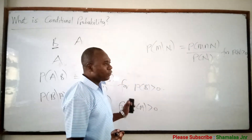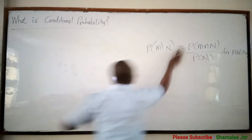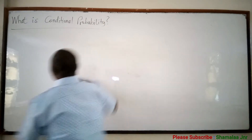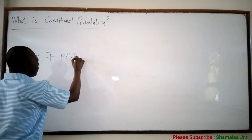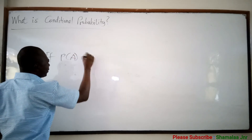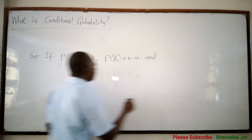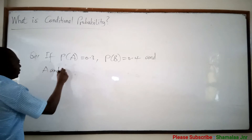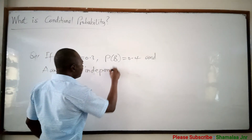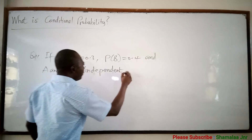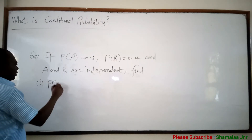It's not difficult at all, viewers. Now let's look at questions. You can say that if P of A is equal to 0.3, P of B is equal to 0.4, and A and B are independent. Find: (I) probability of A given B.